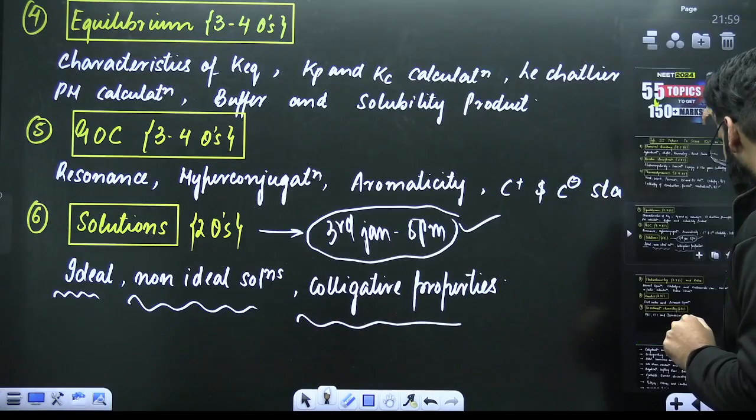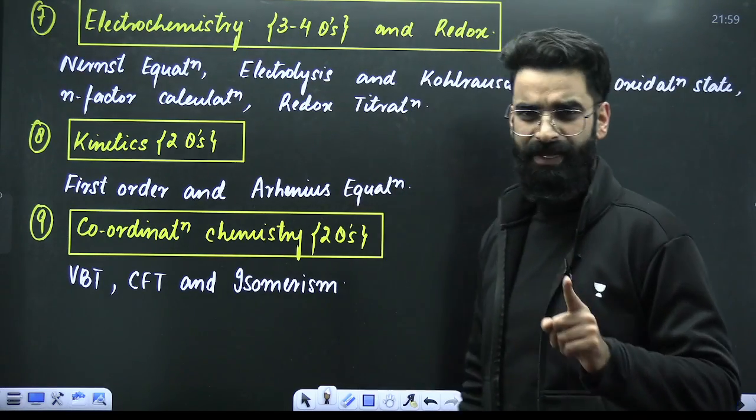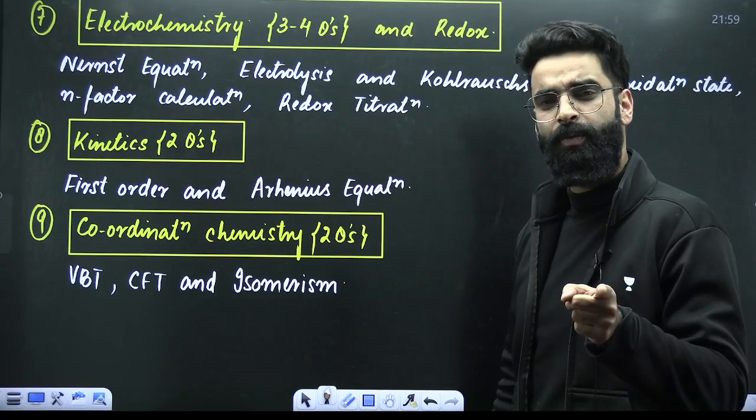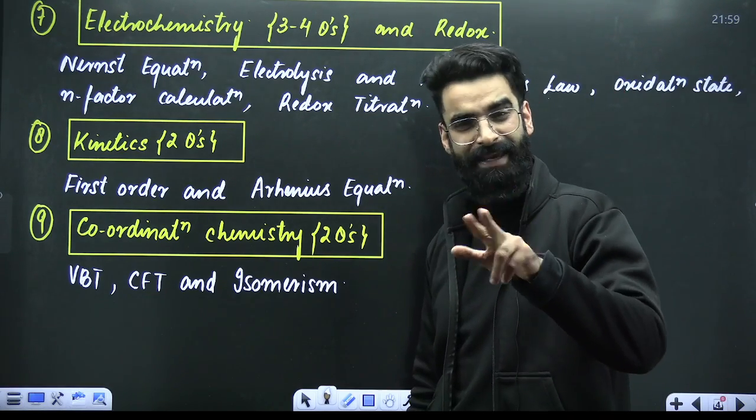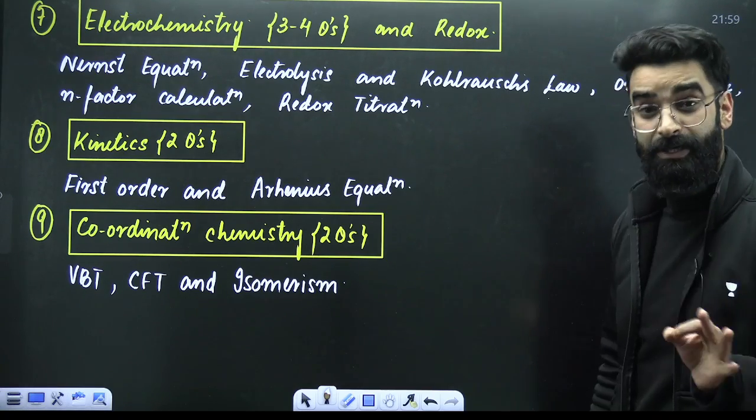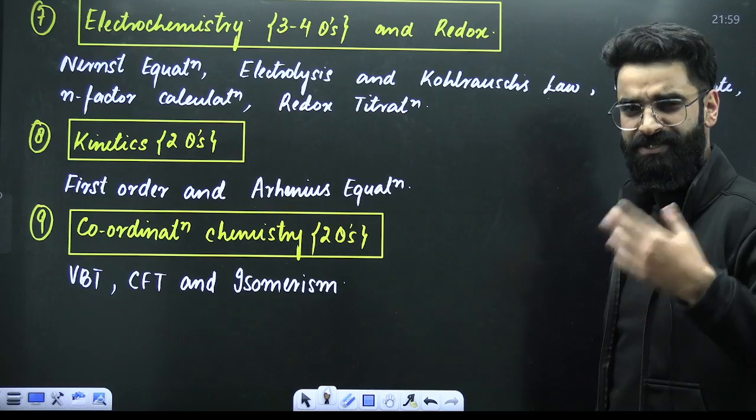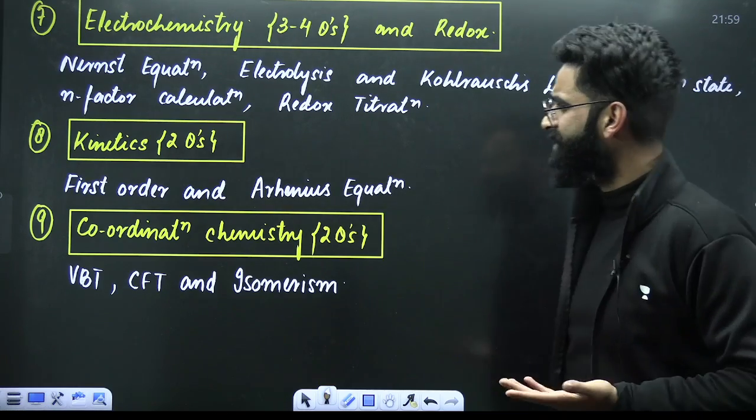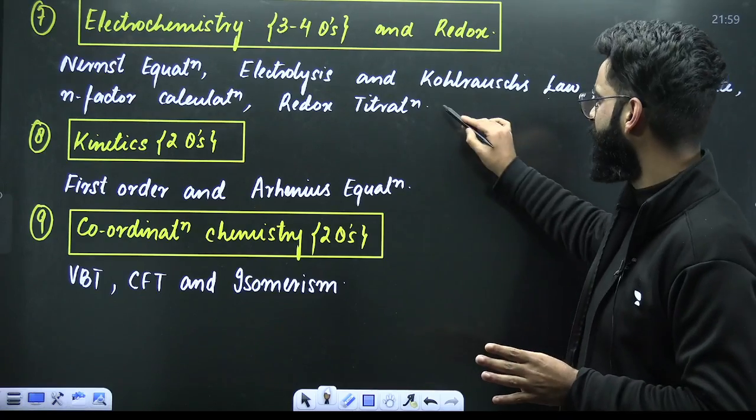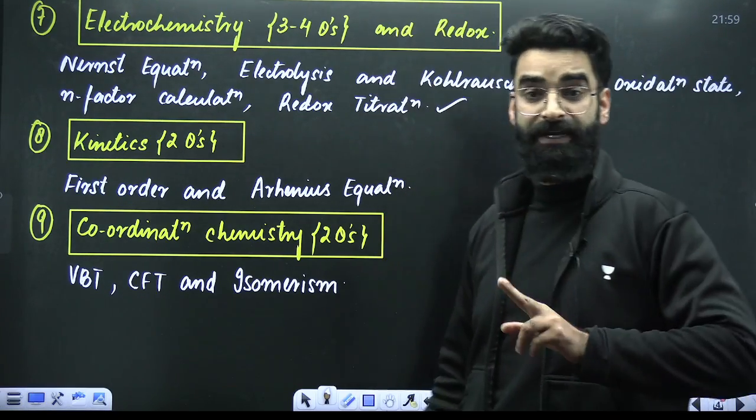Well, my dear students, talking about the other chapters, electrochemistry, 3 to 4 questions are going to be asked. One short short question will be on Nernst equation, one short short question will be on Faraday's first second law of electrolysis. And one short short question will be from Kohlrausch law. Similarly, when it comes to your redox, in the redox, which is already complete on this channel, oxidation state, n-factor calculation, which involves your equivalent mass calculation and redox titration. These are the favorites of two chapters. One involves your redox and another one is your electrochemistry.